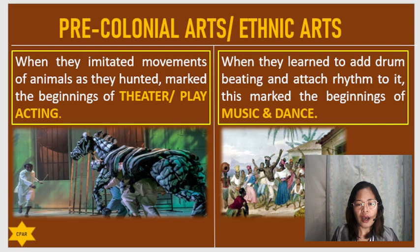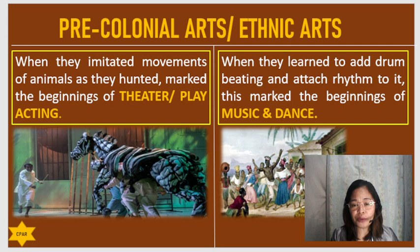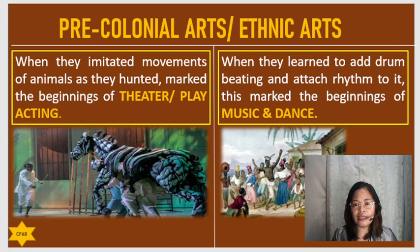They also imitated the movement of animals as they hunted, and it marked the beginning of theater or play acting when they imitate the movement of the animals. Then, when they learned to add drum beating and attach rhythm to it, this marked the beginning of music and dance.